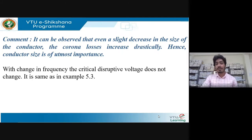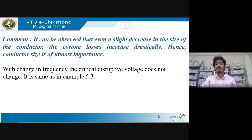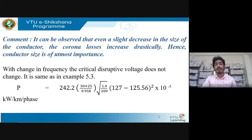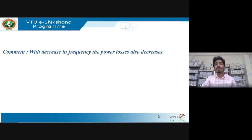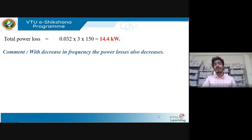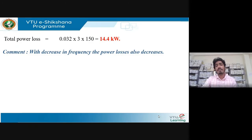Regarding frequency: a change in frequency does not have a major effect on critical disruptive voltage. Whether it is 50 Hz or 60 Hz, you may not experience a severe or any change in V_c. With a decrease in frequency, power loss will also decrease, but frequency may not be a significant parameter in deciding the corona power loss.